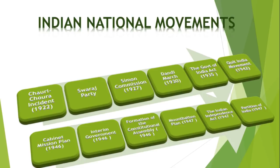The next is the Mountbatten Plan, 1947. According to the plan, India would be divided in a manner that maximum unity was maintained, and Pakistan would be created but as small as possible. The plan declared that power would be handed over by August 15, 1947, on the basis of dominion status to India and Pakistan. According to the Indian Independence Act 1947, India was partitioned on August 15, 1947 into India and Pakistan, and the Act made both independent dominions.